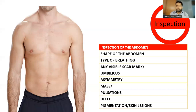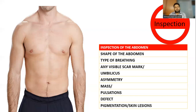Standing at the foot end of the patient, look for scar marks and any asymmetry. If the patient has a large mass in the right hypochondrium such as hepatomegaly, you would see fullness on the right side. Similarly, a large spleen coming down to the left hypochondrium would show fullness on the left side with shifting of the umbilicus to the opposite side. Hernial orifices such as incisional or epigastric hernias can also be visible on inspection.